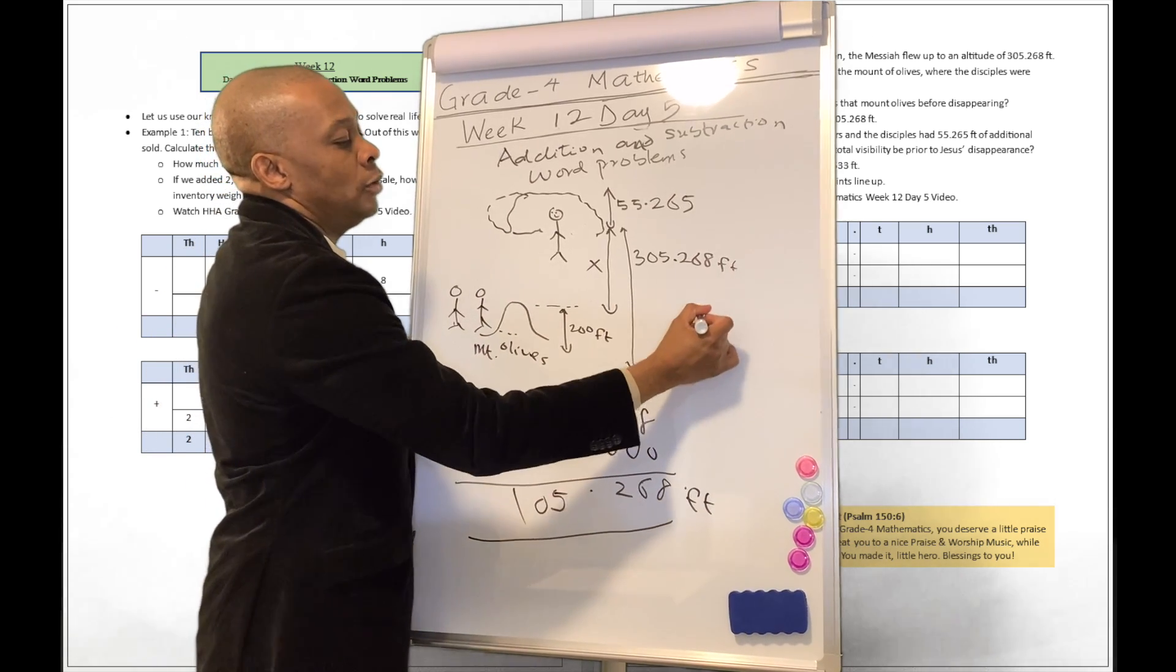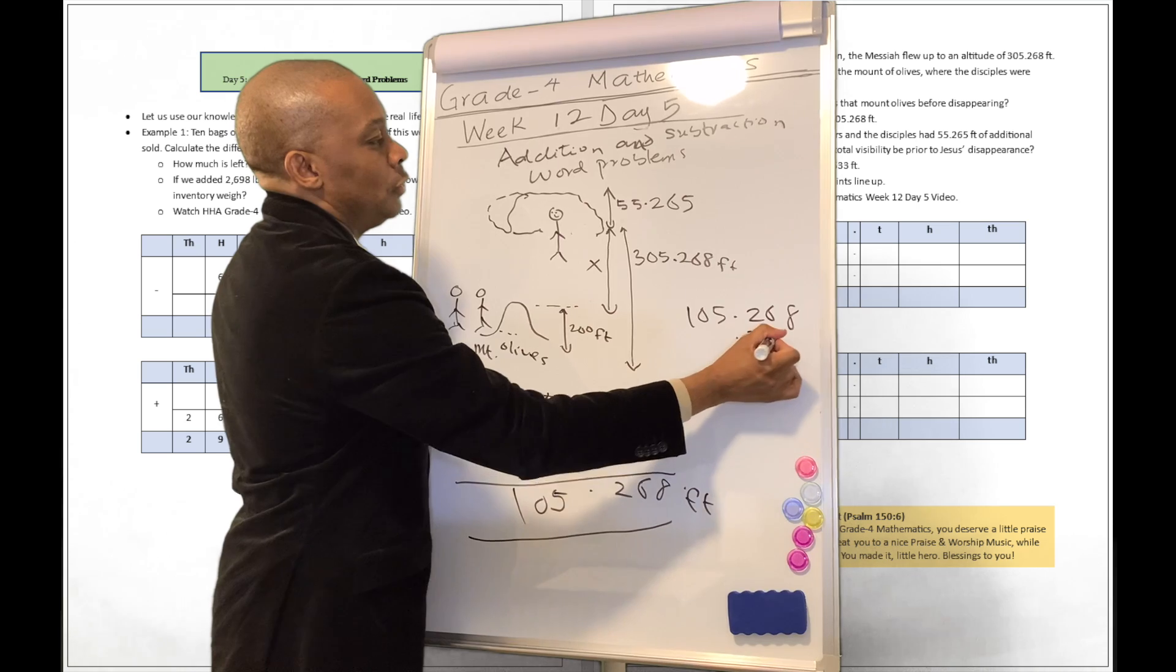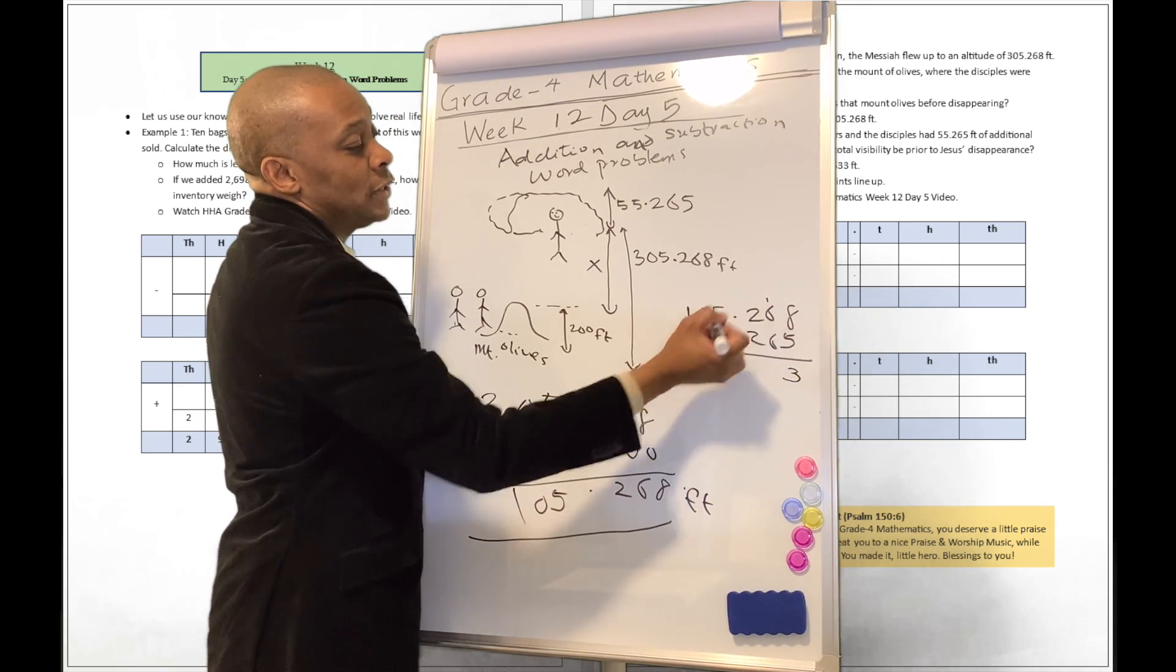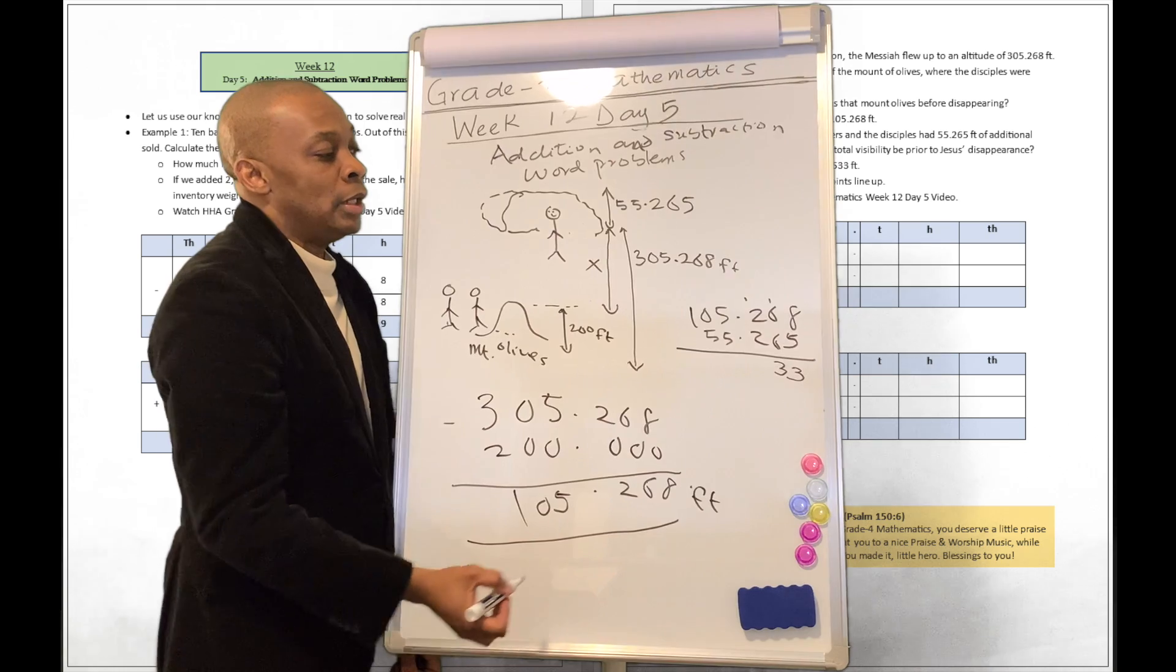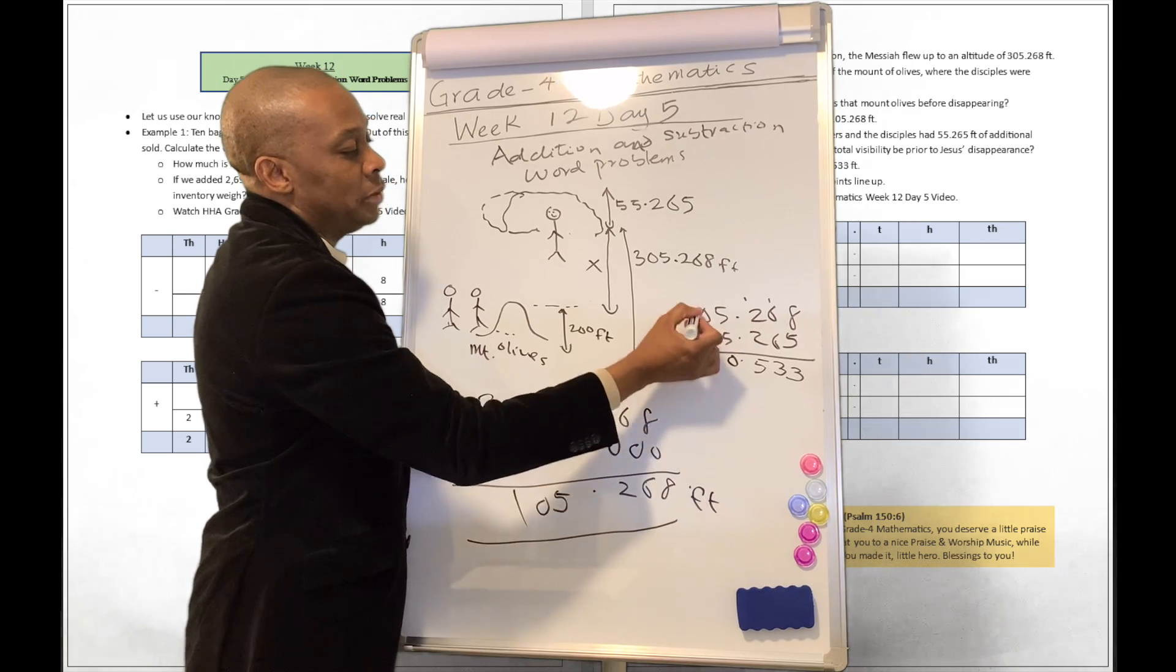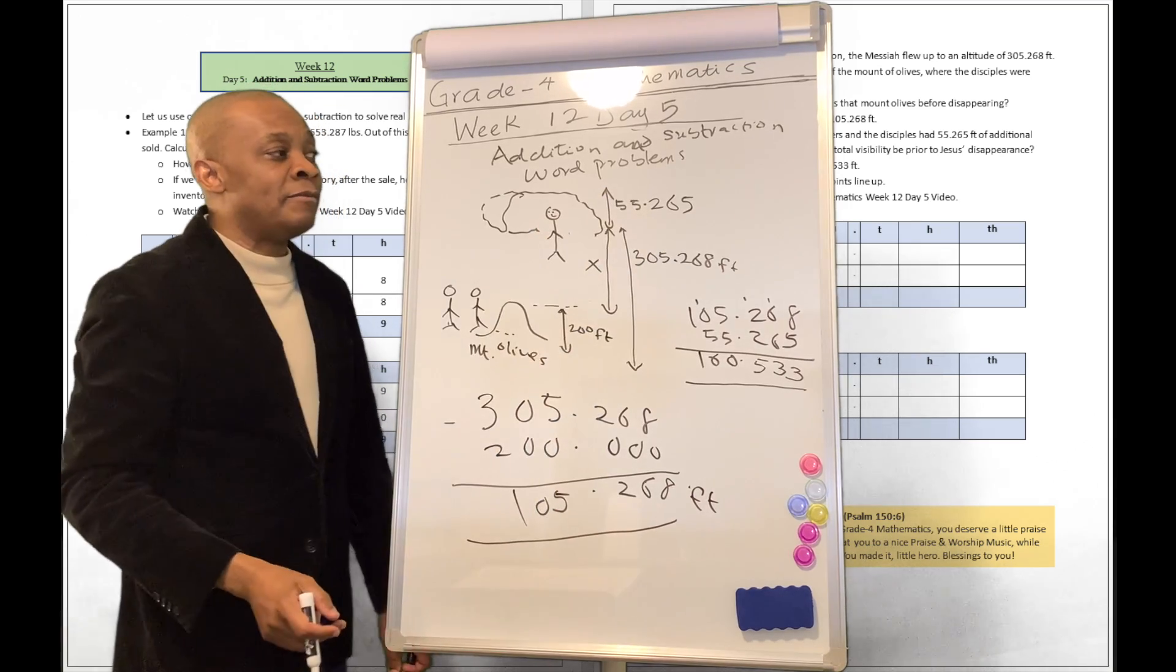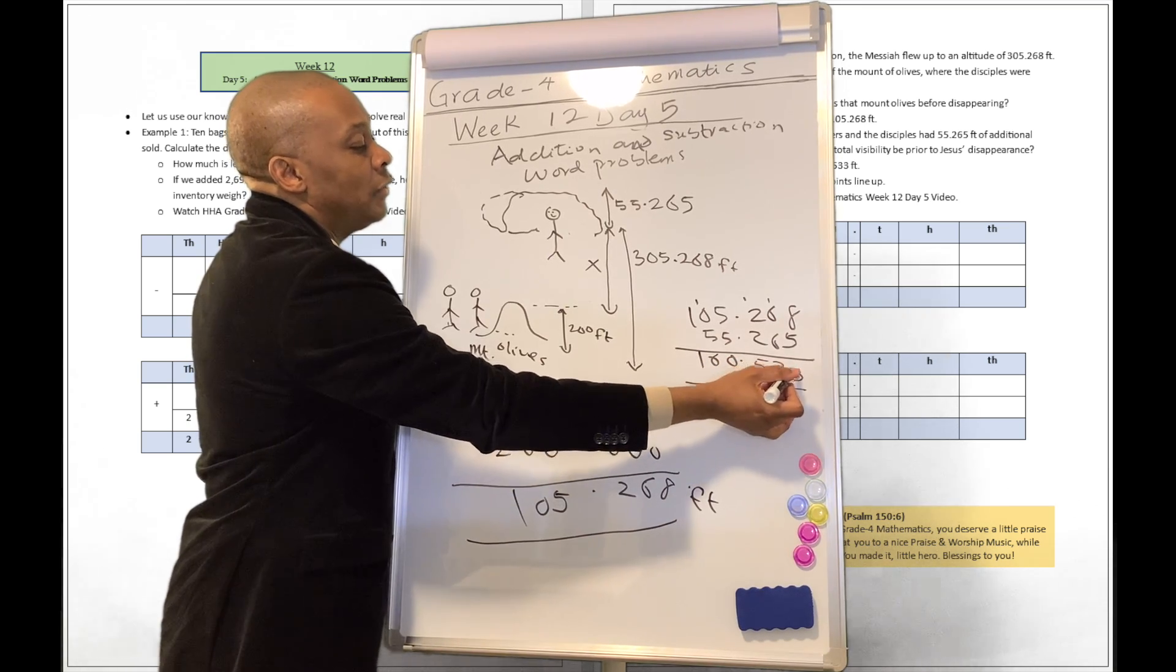So guess what's going to happen? You're going to see 105.268 plus 55.265 here. So that's going to be 8 plus 5, that's 13. Carry 1 over, 1 plus 6 is 7. 7 plus 6 is another 13. Carry 1 over here, 1 plus 2 is 3. 2 plus 3 plus 2 is 5, so that's going to be 5. 5 plus 5, that's a 10. And so that's a 0, carry a 1 over here, 1 plus 0 plus 5, that's a 6, and that's a 1. So they have an additional visibility of 160.533 feet.